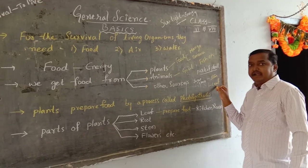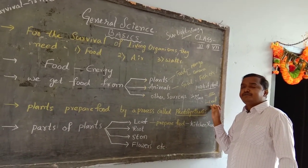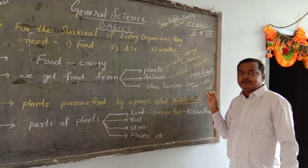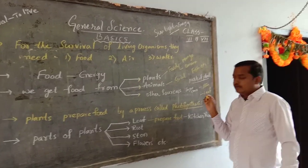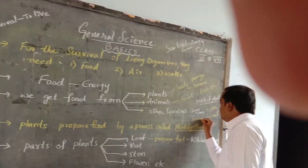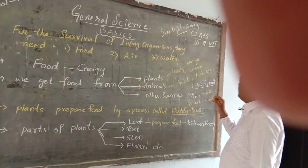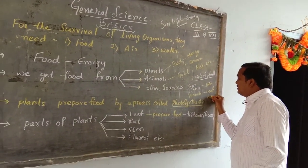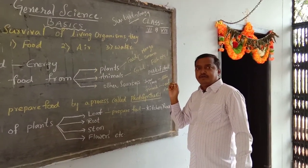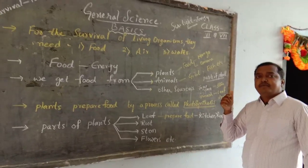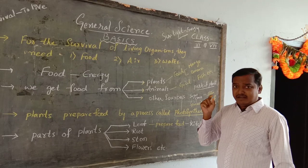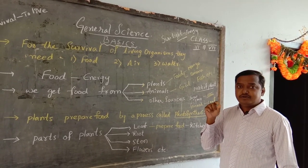For leaf — which leaf do you eat as food? You can write spinach. That is a leafy vegetable. Next is root — what food item do you get from the roots of a plant?